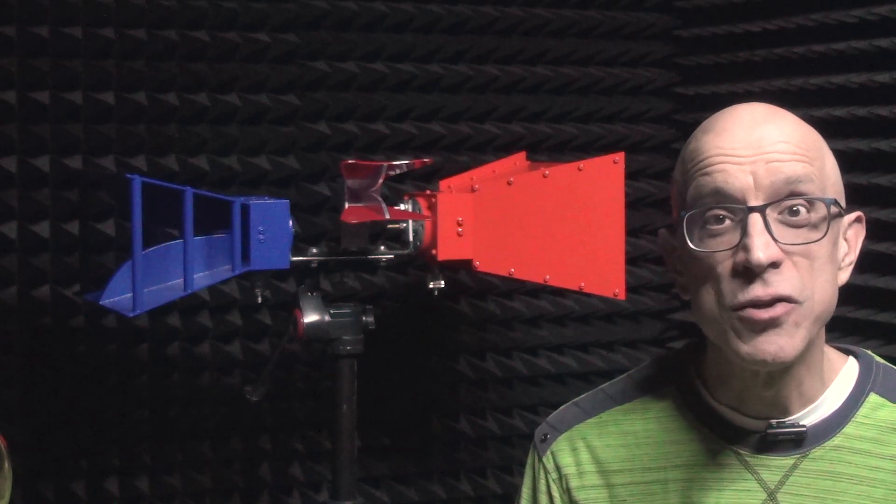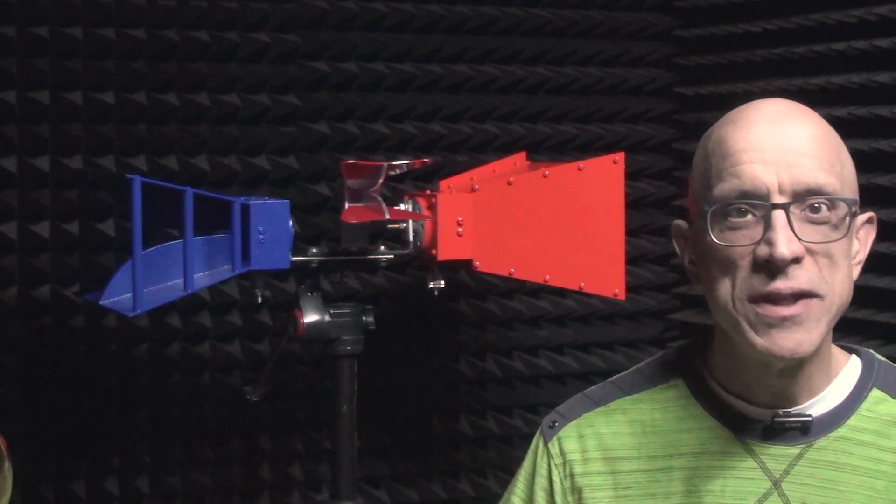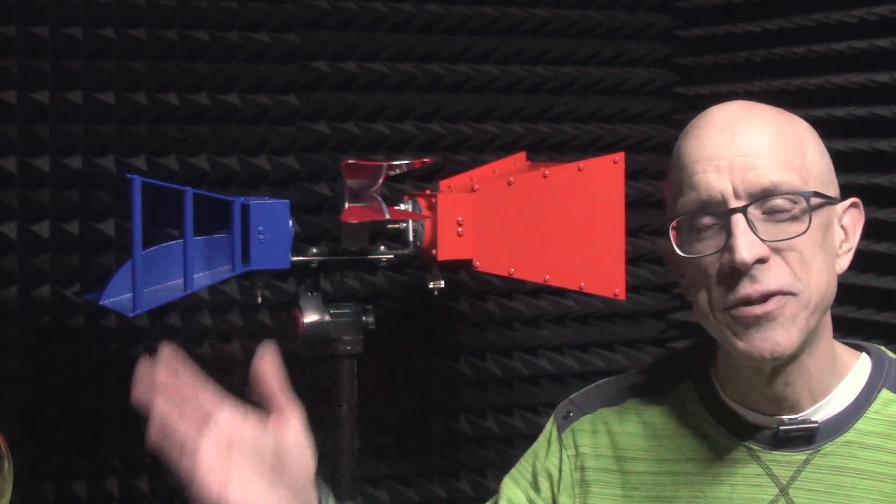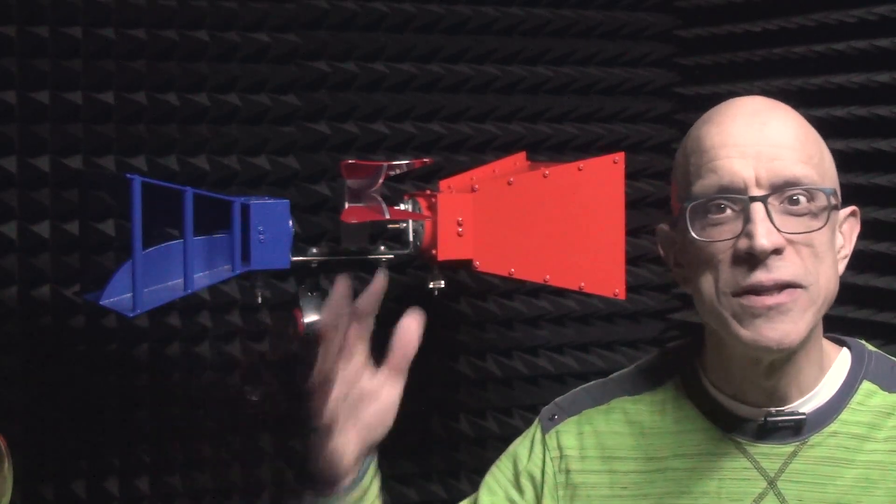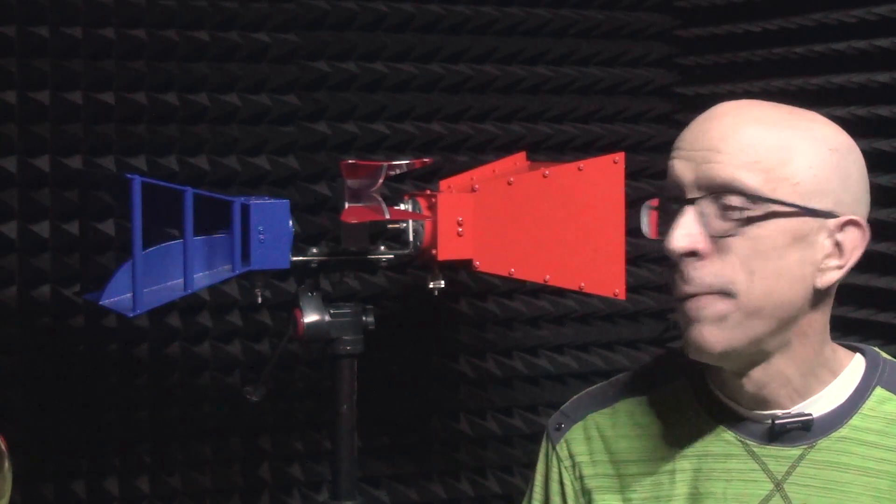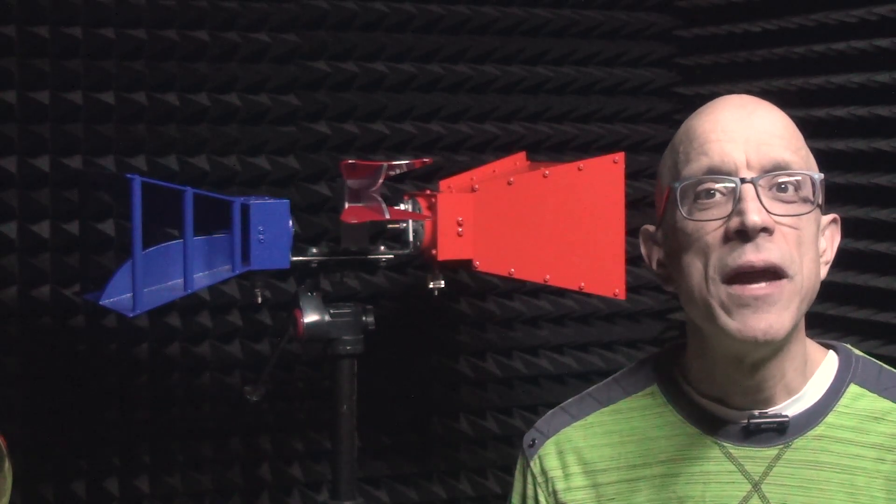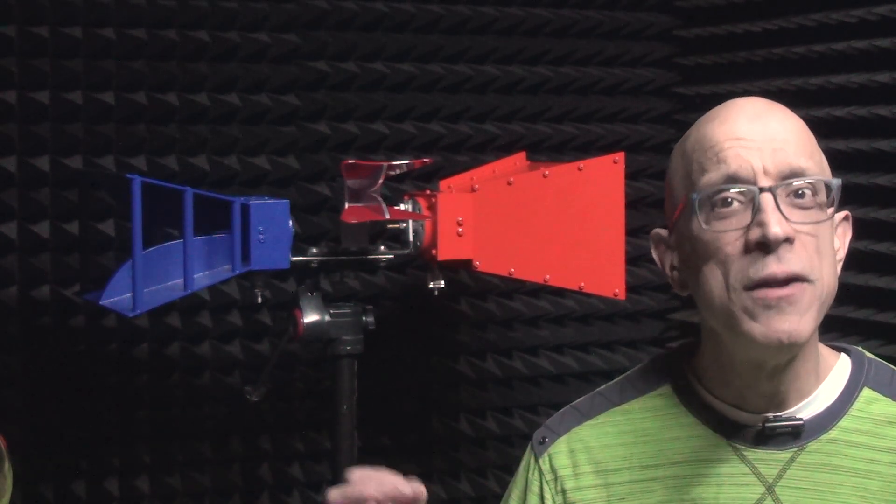And when I say controlled environment, the reason for that is to eliminate other signals, such as Wi-Fi routers and beacons and things like that, or cell phone towers. You have to eliminate all those external noises and influences that can alter or disturb the test data. So in this case, a controlled environment, I'm sitting in an anechoic RF anechoic chamber. Anechoic, what does that mean? No reflections.